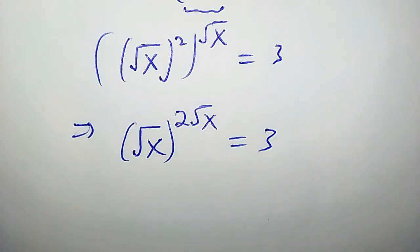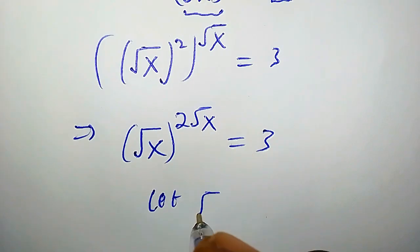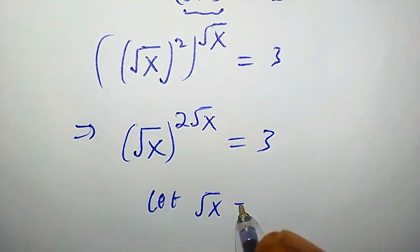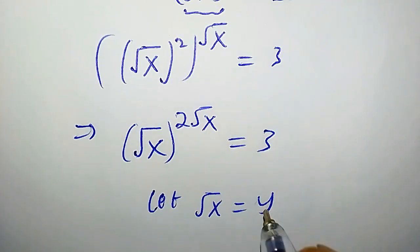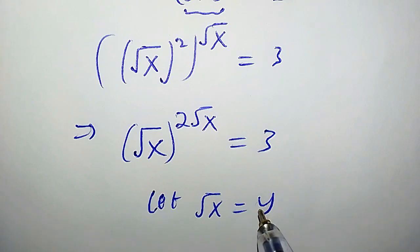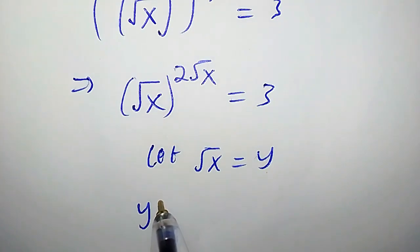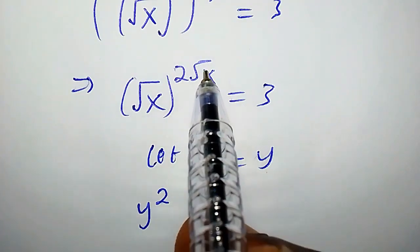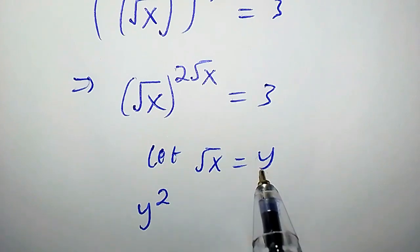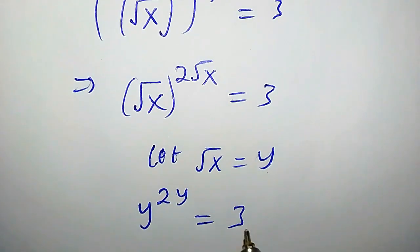Now let's set square root of x equal to y. So in place of square root of x, we will replace it with y. From here, we're going to have y to the power of 2y equals 3.